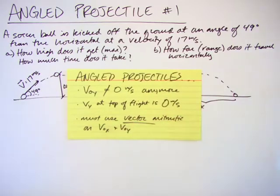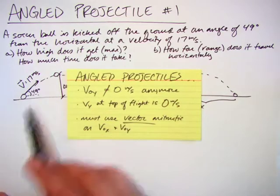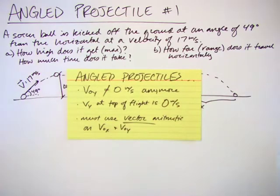What changes from our horizontal problems? If I launch something up at an angle, such as a soccer ball at a velocity of 17 meters per second, 49 degrees above the horizontal, vi or v0y is no longer zero. So I can't have that condition when I have something launched at an angle.